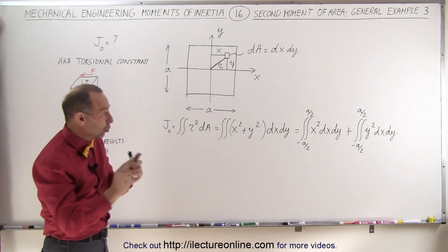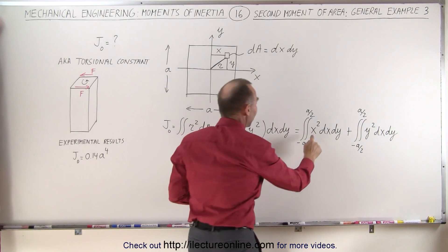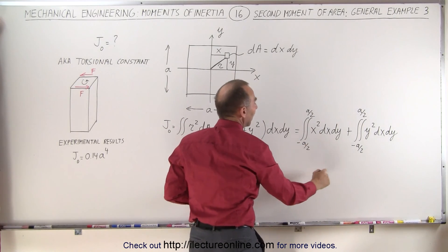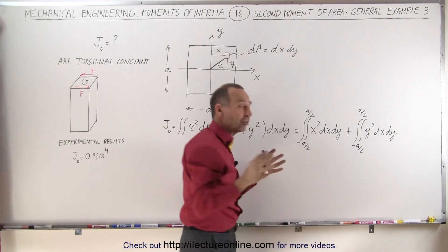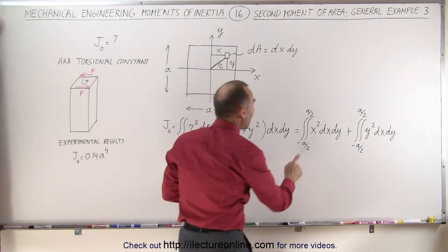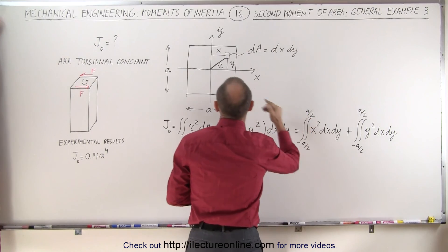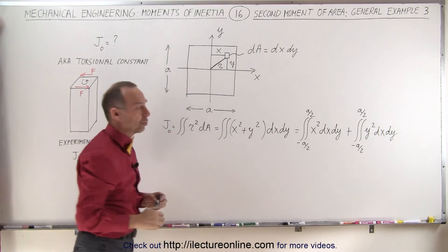Which means we're going to end up with two integrals, one that has x squared times dx dy, and one that has y squared times dx dy. Both of them, because of the symmetry, will have limits from minus a over 2 to a over 2, both in the x and in the y direction.